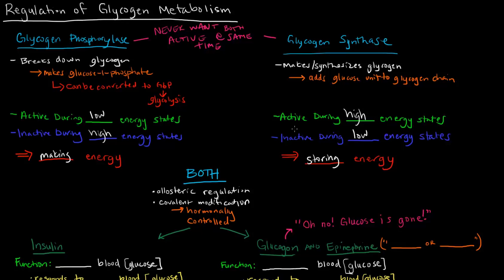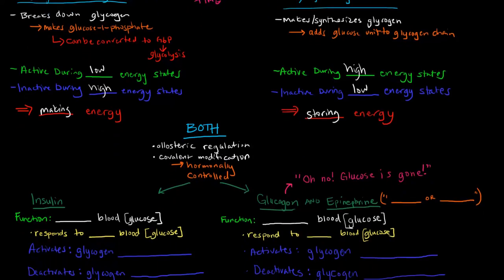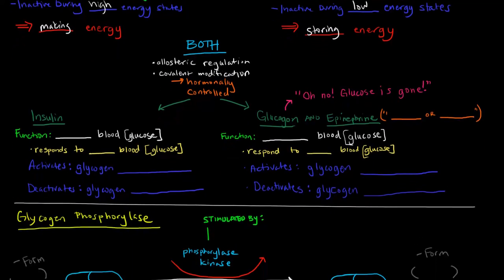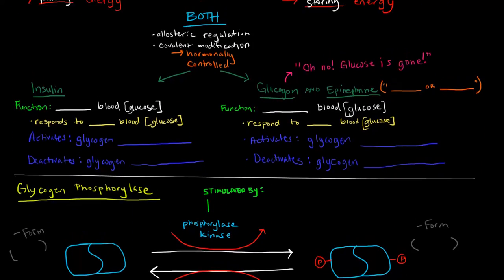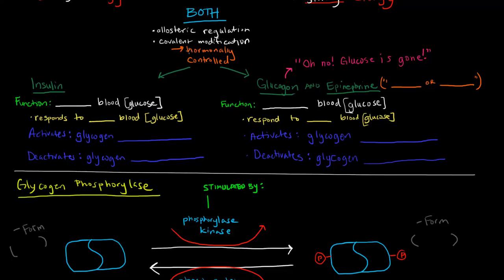So essentially, glycogen phosphorylase is involved in making energy, whereas glycogen synthase is involved in storing energy. Now these are both regulated allosterically and covalently. The covalent modification is actually controlled by hormones. I'll get to the allosteric regulation in just a moment.